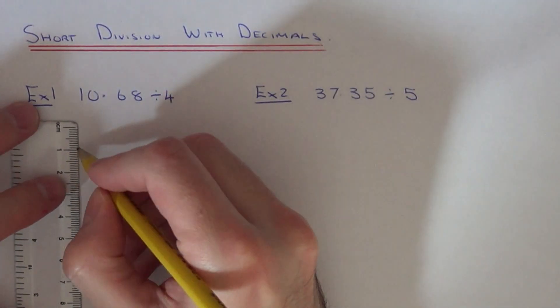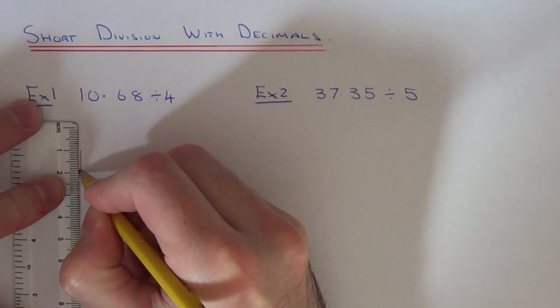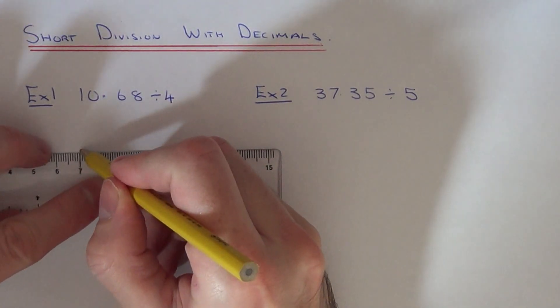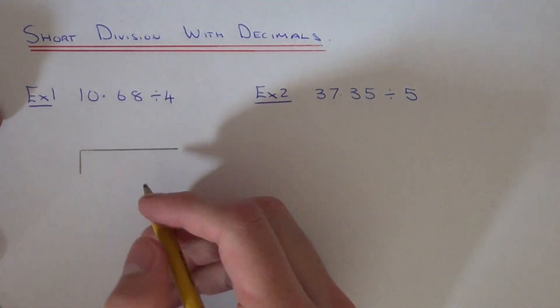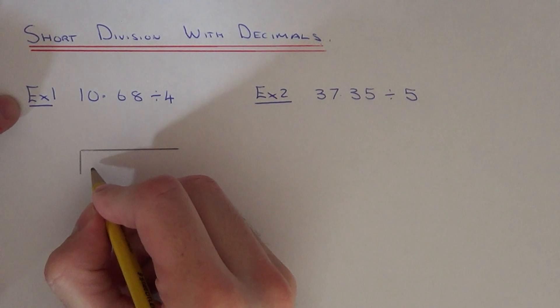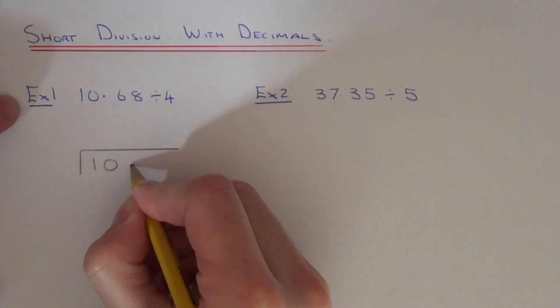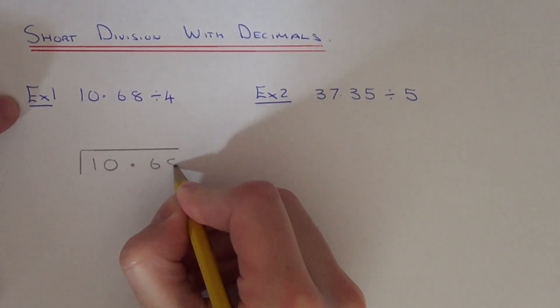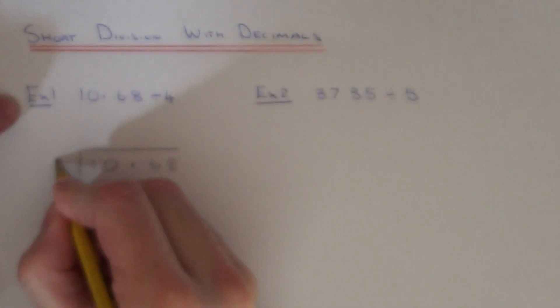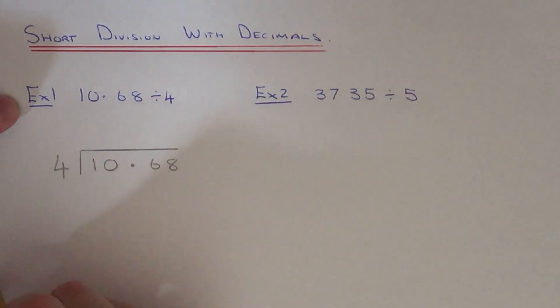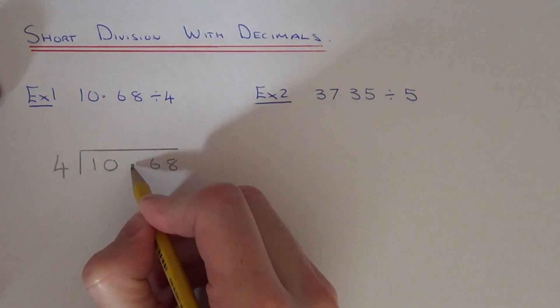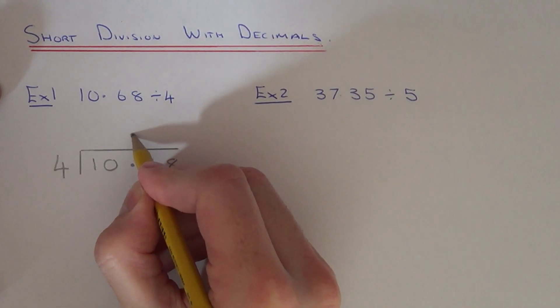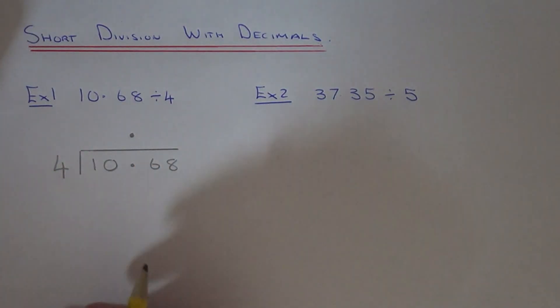First of all, lay your division out like so. You want a vertical line and a horizontal line. Put the number that you're dividing, which is 10.68, underneath the horizontal line and your number that you're dividing by at the start. Now in your answer, the decimal point will be in line with the number that you're dividing, so the decimal point will be here in the answer.